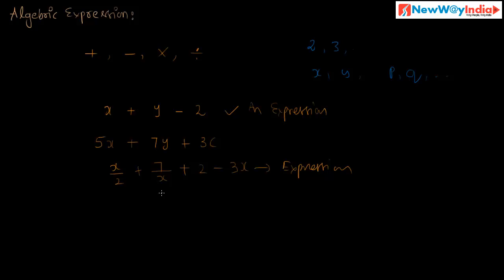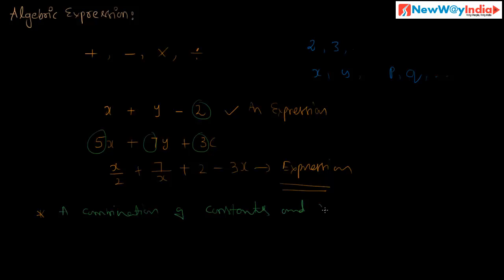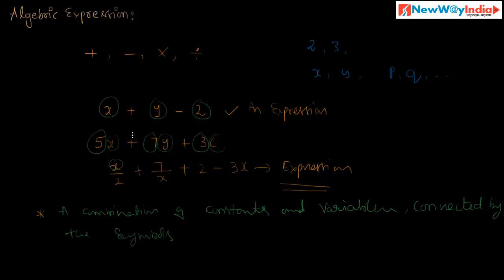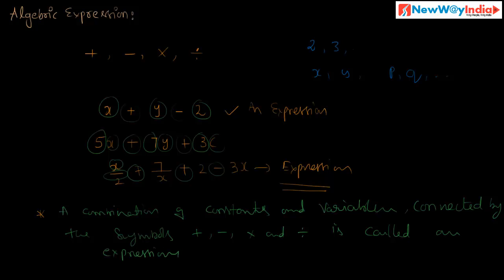In this expression, terms are connected by addition, subtraction, division, and multiplication. So a combination of constants and variables connected by the symbols like plus, minus, into, and divided by is called an algebraic expression.